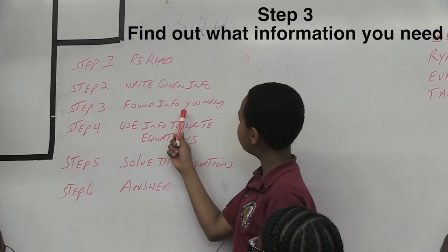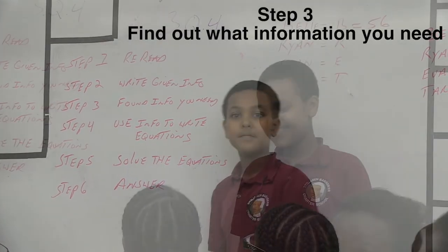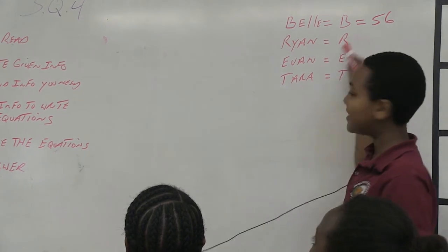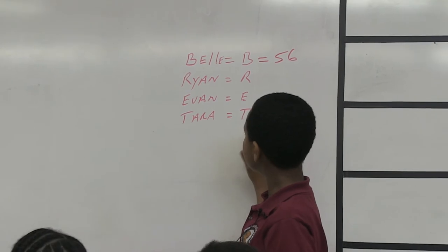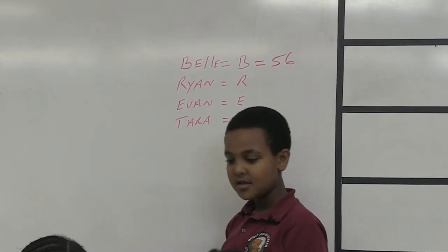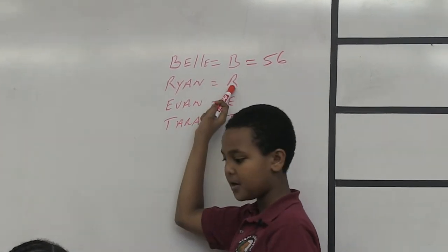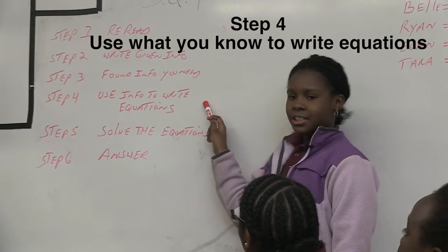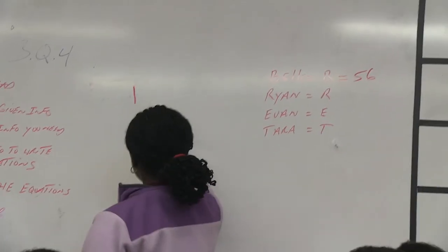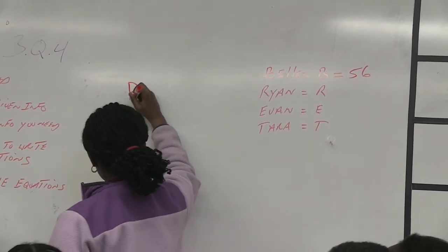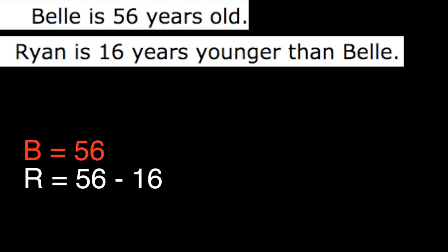Find the information you need — that is step three. You need to find out how old Ryan is. As the problem states, Ryan is 16 years younger than Belle. Step four is to use the information you know to write equations. B equals 56. Ryan is 16 years younger than Belle, so R equals 56 minus 16.